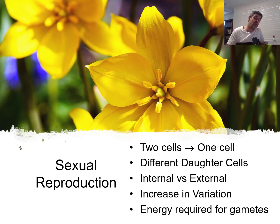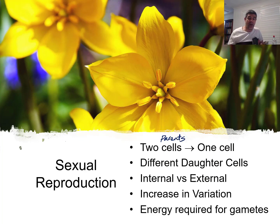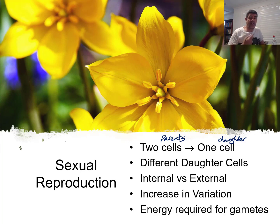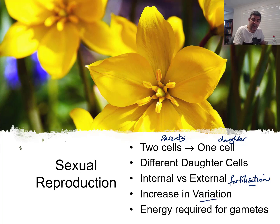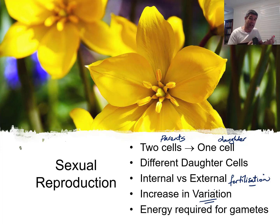If we contrast asexual reproduction with sexual reproduction, this time we have two parents, and cells from each parent combine to produce one offspring. One of the main advantages of sexual reproduction is that the offspring is therefore different from both of its parents. There is extra variation introduced into the offspring as a result of sexual reproduction — variation that is not the case for asexual reproduction. This increase in variation is a really important basis upon which natural selection can operate.